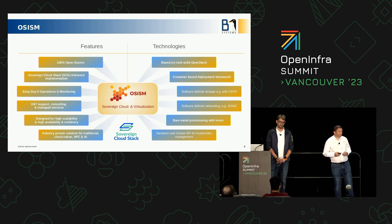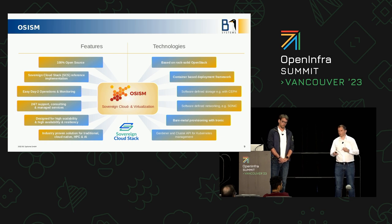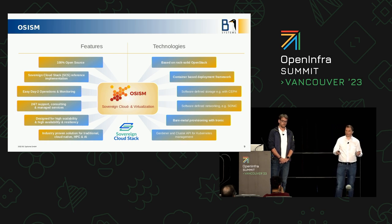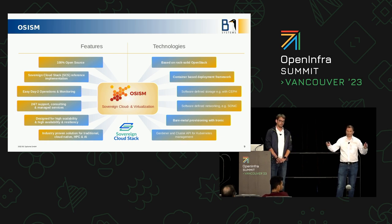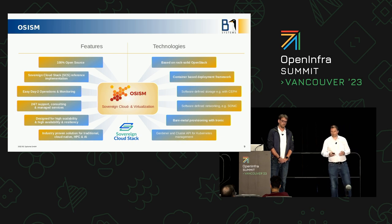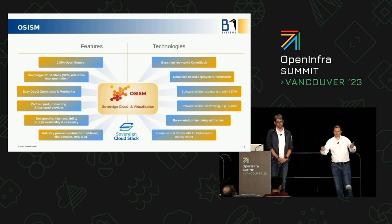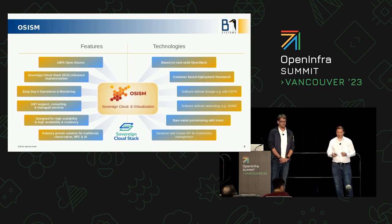I'd like to introduce a solution called OSISM — it's an OpenStack distribution. It's not a B1 solution; OSISM is a separate company, and B1 Systems is an implementation partner for OSISM. I've chosen this solution because it fits very well into our hyperscaler story: it's really built for massive scale, is 100% open source software, is a deployment framework, completely containerized, based on Kolla-Ansible, and provides basically all OpenStack services — compute, network, storage, and all variations OpenStack supports. It's also the reference implementation of the Sovereign Cloud Stack.